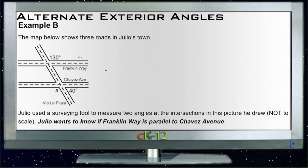Alright, Example B says the map below shows three roads in Julio's town. We have Franklin Way, Chavez Avenue, and Viola Playa. Julio used a surveying tool to measure two angles at the intersections in this picture he drew, not to scale, and he wants to know if Franklin Way is parallel to Chavez Avenue.